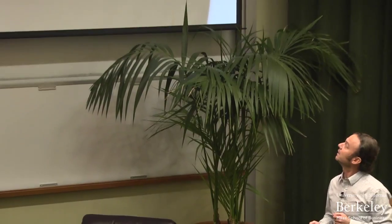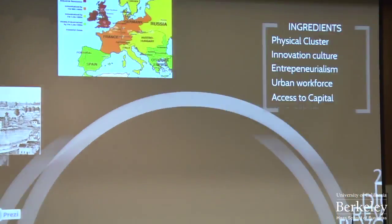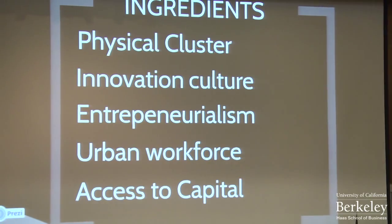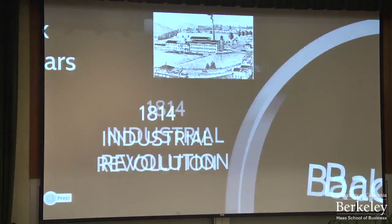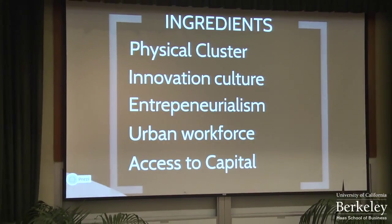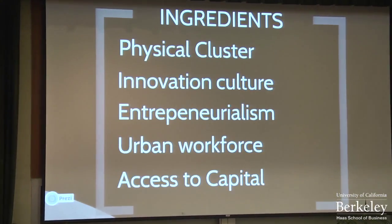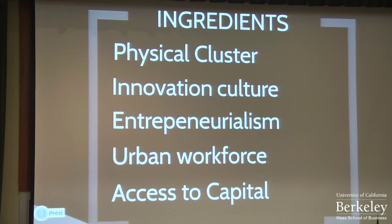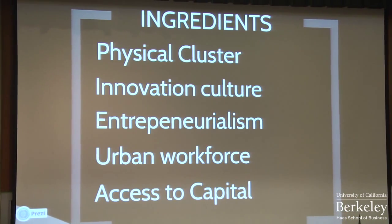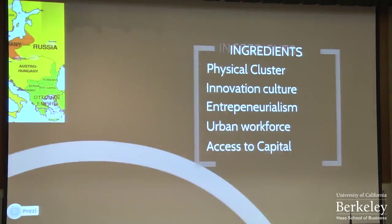We're going to go back 200 years really quickly, and this is going to be very fast because we only have five minutes. 1814, the Industrial Revolution in England. The ingredients: they had a physical cluster there, innovation, culture, entrepreneurialism, urban workforce, and access to capital. It was like today in Silicon Valley — that's how it was back then in England.